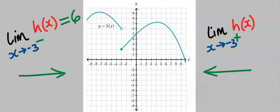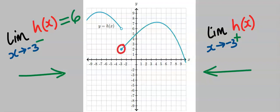The limit of h(x) as x tends to minus 3 from the right: we trace minus 3 to the point coming from the right-hand line. Tracing this point towards the y-axis, our answer from the right is 2.